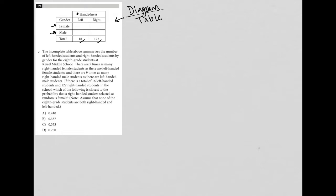The next sentence says there are five times as many right handed female students as there are left handed female students. So I don't know how many left handed female students I have. I do know that there are five times that X number of right handed female students.